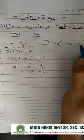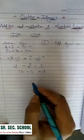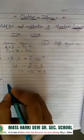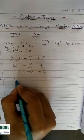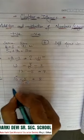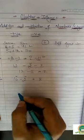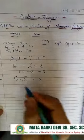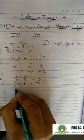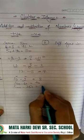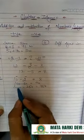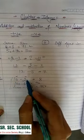Now let us talk about numbers with different signs. First, we take the positive number as the greater number. For example, 10 minus 2 gives 8. Similarly, 100 minus 60 is 40, and 1000 minus 250 is 750. In all these cases, the positive number is greater than the negative number.